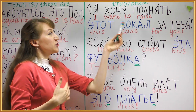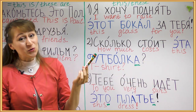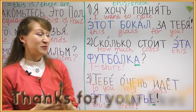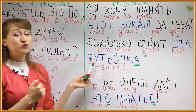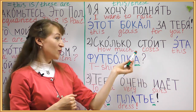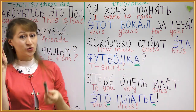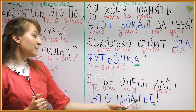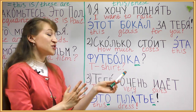Now let's read the full sentences. Я хочу поднять этот бокал за тебя — 'I want to raise this glass for you,' useful when proposing a toast. Сколько стоит эта футболка? — literally 'how much does this t-shirt cost?' meaning 'how much is it?' Это платье тебе очень идёт — 'this particular dress suits you very much.' Унеси, пожалуйста, эти сумки — 'please take away these bags,' plural form.